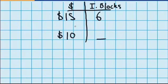Let's try another question. This time, for $15, I can buy 6 ice blocks. Now I want to work out how many ice blocks could I buy if I had $10.